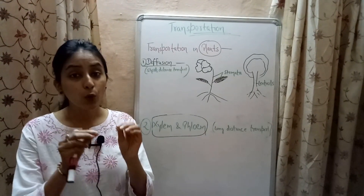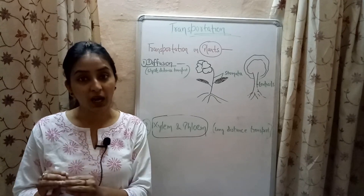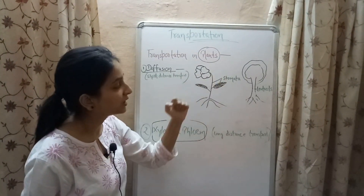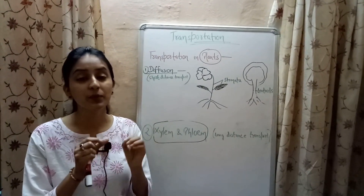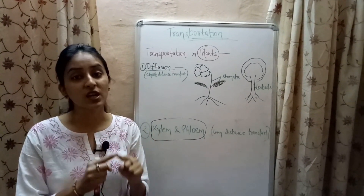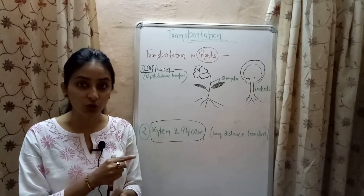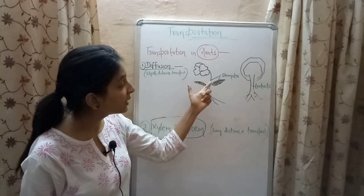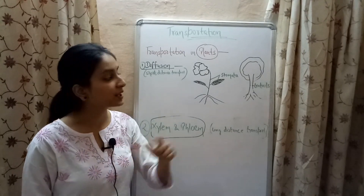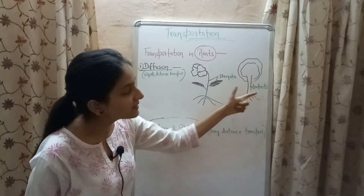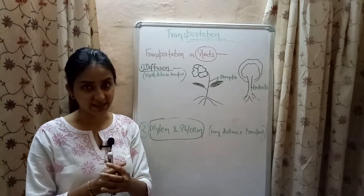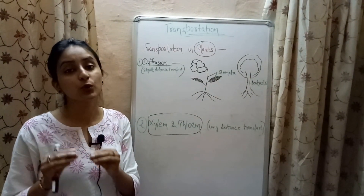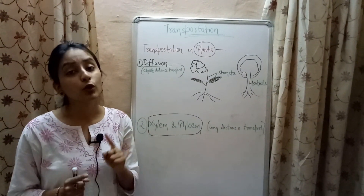In plants, short distance transportation occurs by a process called diffusion. Pores present on certain parts of the plant help in exchange of gases; these pores are known as stomata. For example, stomata present on the leaves help in transportation of carbon dioxide and oxygen in the leaf part of the plant. In plants with woody stems, stomata are absent and instead the pores are known as lenticels, which help in transport of gases.